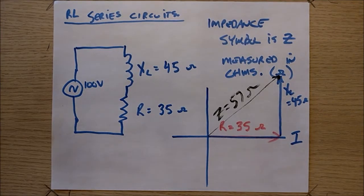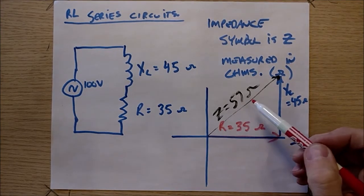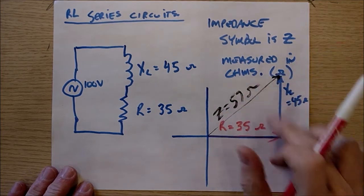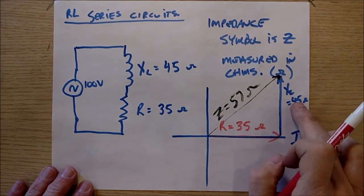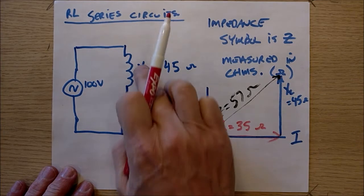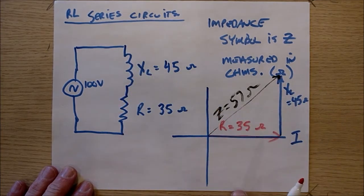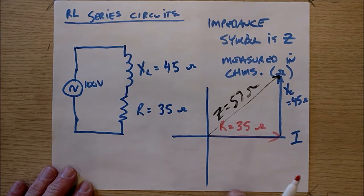Okay guys, I'm back. So what we've done here is just calculated the impedance of the circuit, which is the phasor sum of the two components that are in this circuit. And now that I've calculated the impedance of the circuit, I can calculate the current in the circuit.